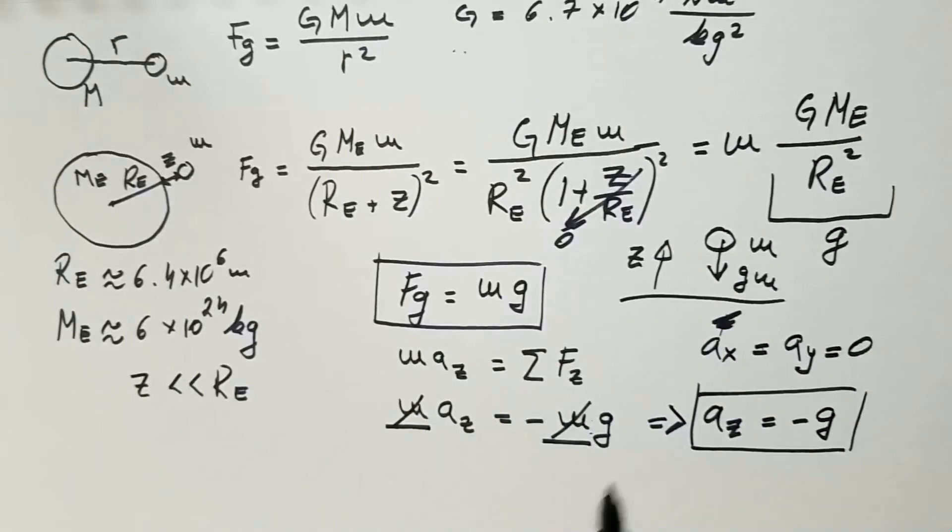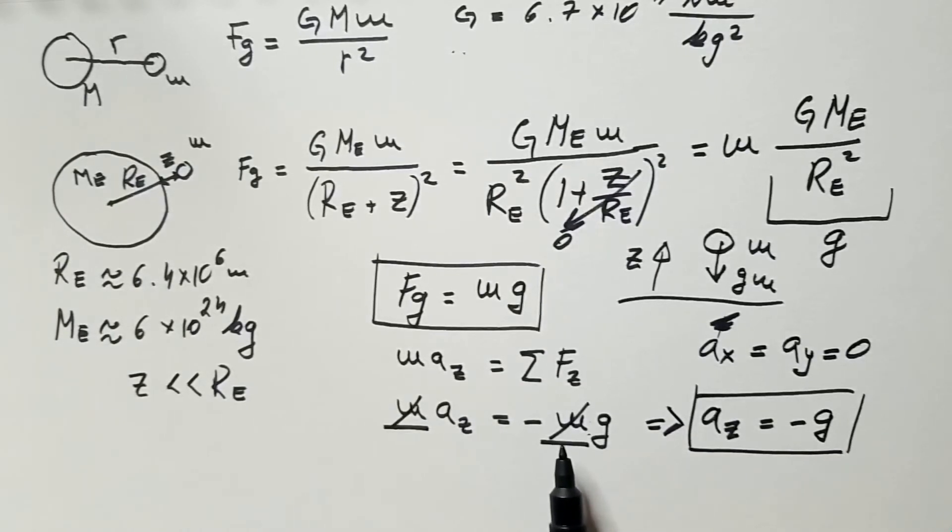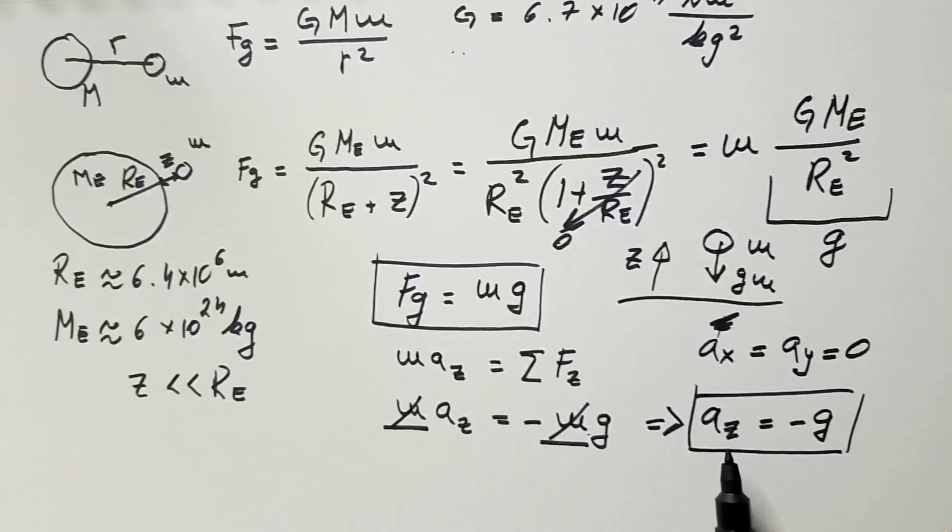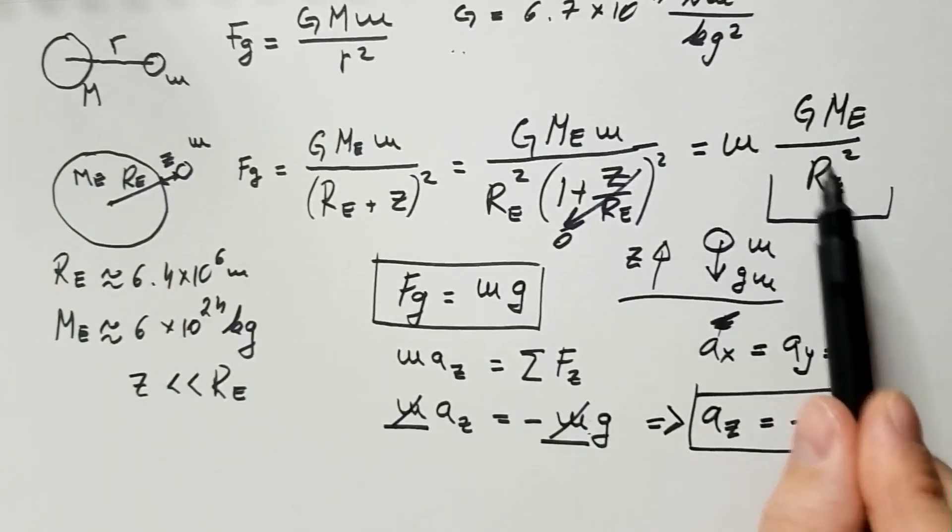However, all experiments ever conducted show that these two masses are the same. If they were different, then indeed perhaps heavier objects would fall faster than light objects, or maybe even light objects would fall faster than the heavy object, depending on what would be the relationship between inertial mass and gravitational mass. Fortunately, in our universe they are the same, and we end up with this simple relation that says that the acceleration due to gravity is simply minus g, where g is this constant that depends on the mass of Earth, radius of Earth, and G.